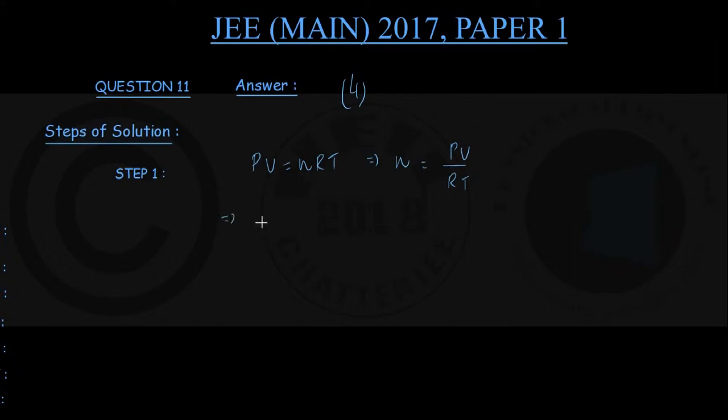It follows therefore that n proportional to 1 upon T where P and V are constant. That is the case of this problem since in an open room pressure and volume remain constant, and number of moles of air must be varying inversely as the Kelvin temperature.